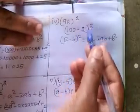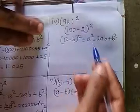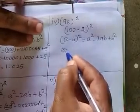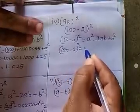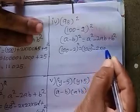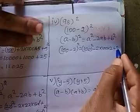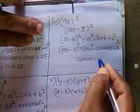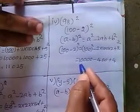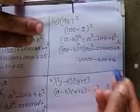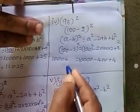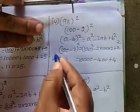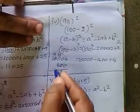Next, fourth sum: 98 whole squared. We write this as (100 − 2)². This is in the form of (a − b)² = a² − 2ab + b², where a is 100 and b is 2. So: 100² − 2 × 100 × 2 + 2² = 10,000 − 400 + 4.